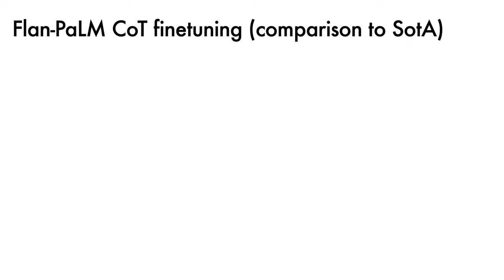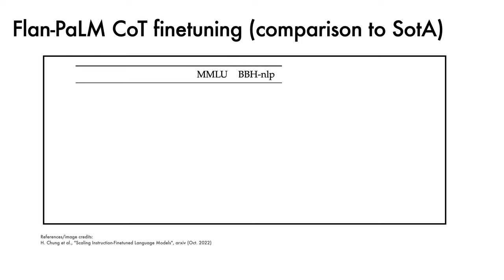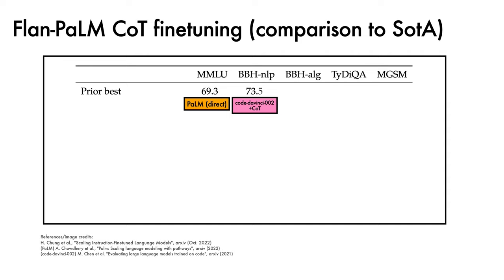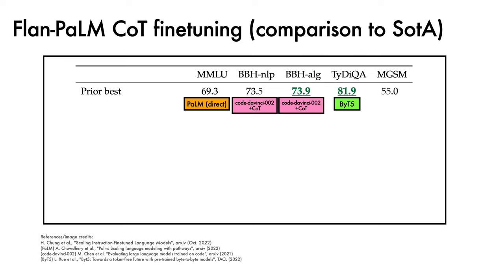To understand how the inclusion of chain-of-thought reasoning into the fine-tuning mixture delivers gains, Flan-PaLM is compared to the prior state-of-the-art across four benchmarks. The prior best performances are: 69.3 by PaLM 540B with direct prompting on MMLU; 73.5 by the Code-Davinci-02 model with chain-of-thought prompting on BigBench Hard NLP; 73.9 also by Code-Davinci-02 with chain-of-thought prompting on BigBench Hard Algorithms; 81.9 from fine-tuned T5 on TidyQA; and 55.0 by PaLM coupled with Google Translate and chain-of-thought prompting on MGSM.